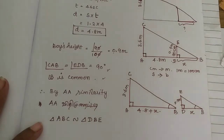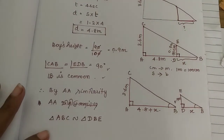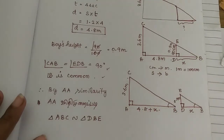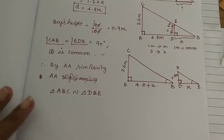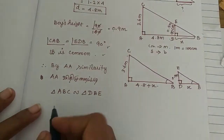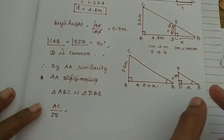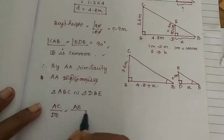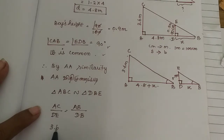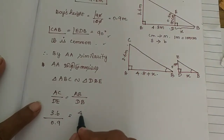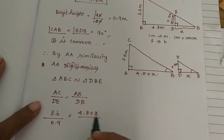Since the triangles are similar, we set up the proportion: AC over DE equals AB over DB. Substituting the values: AC equals 3.6 meters, DE equals 0.9 meters, AB equals 4.8 plus x, and DB equals x.